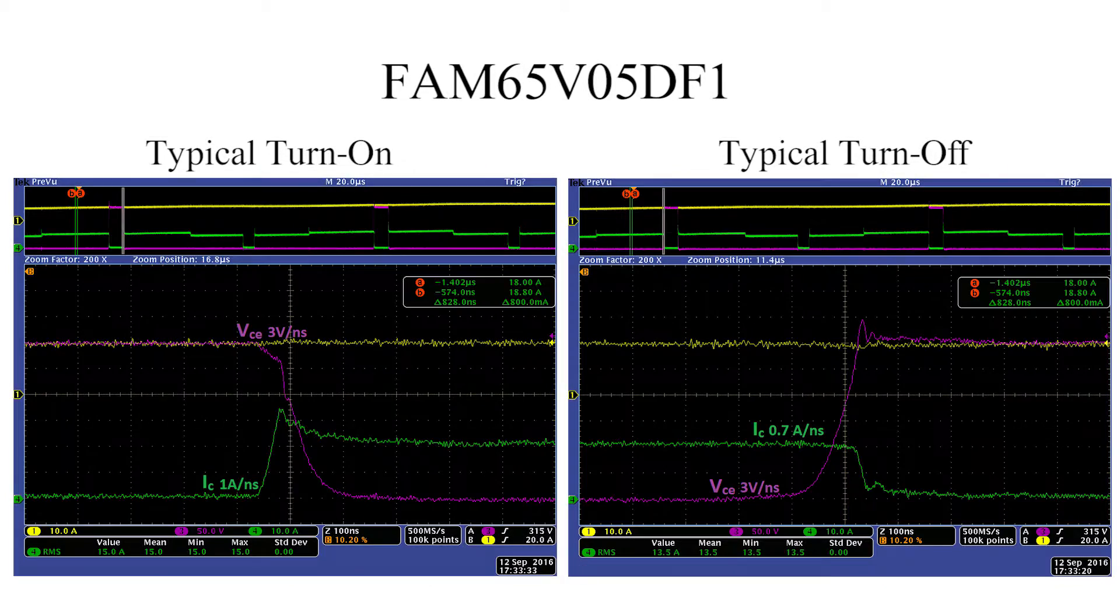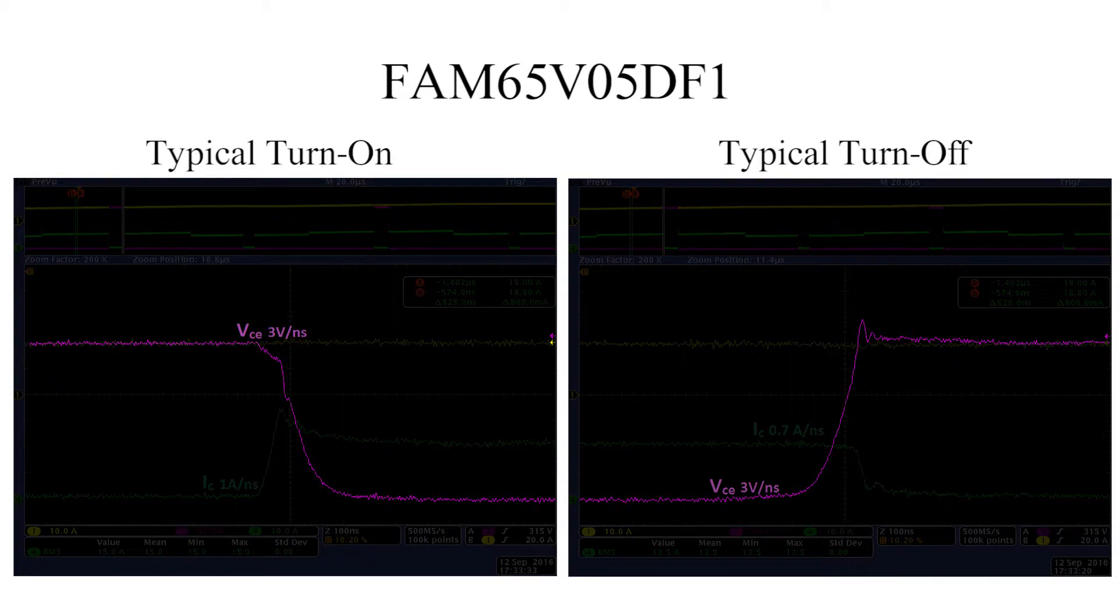Fairchild has optimized the gate drive in the module with the integrated driver ICs and gate resistors to provide excellent switching performance. The module provides controlled DVDT below 10 volts per nanosecond. This prevents any parasitic turn-on, improves EMI noise issues, and alleviates any concerns about the reliability of the motor winding insulation.